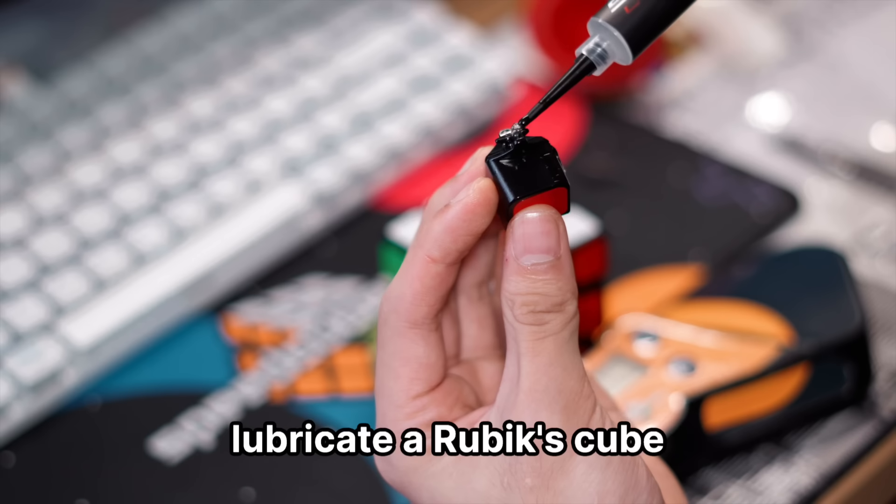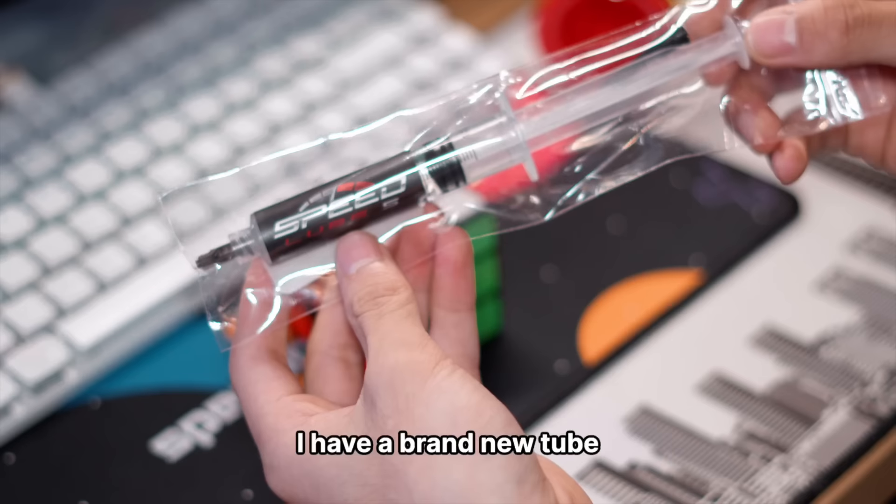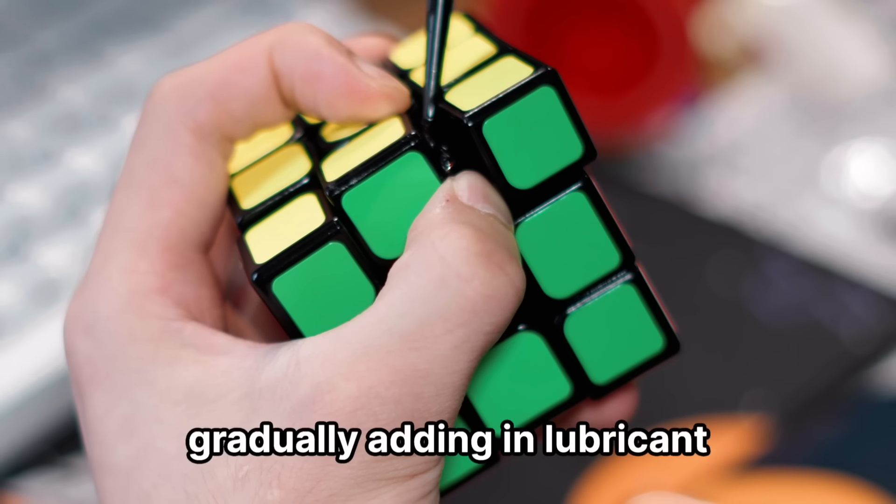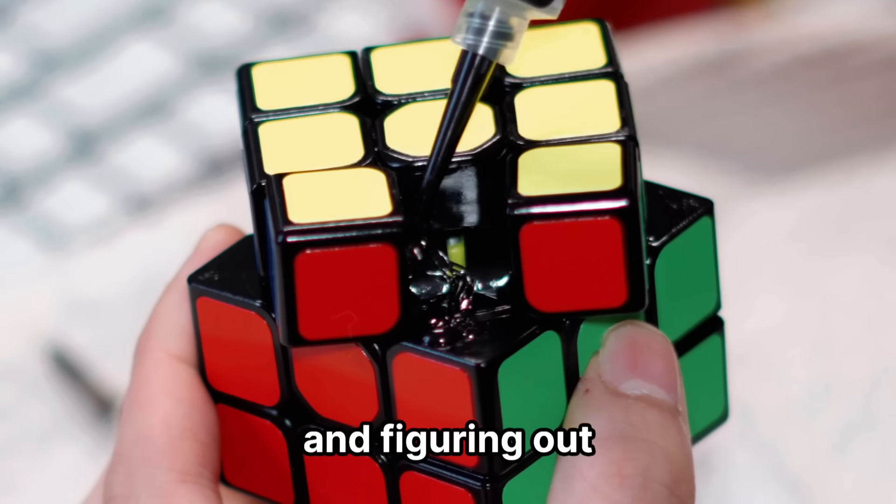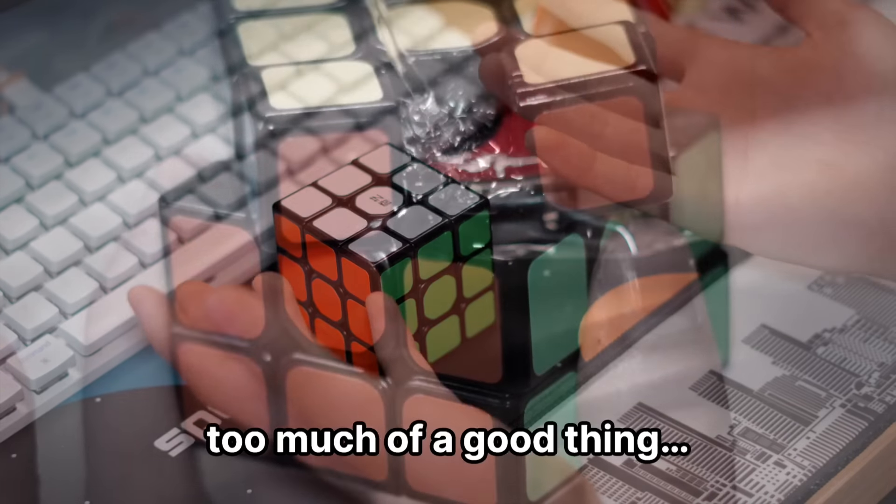Everyone knows that you have to lubricate a Rubik's Cube for it to turn smoothly. But how much lube should you put in your cube? I have a brand new tube of Rubik's Cube silicon lubricant and we're going to be gradually adding in lubricant and figuring out how much lube is too much. Although you can never have too much of a good thing, right?